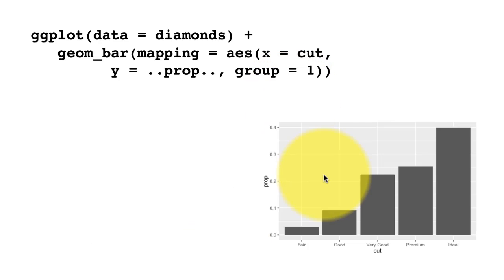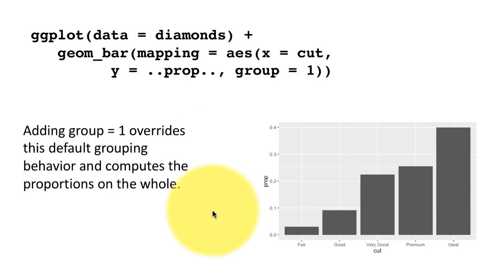So that is restored. The problem is solved. Adding group equals one overrides the default grouping behavior and computes the proportions on the whole.